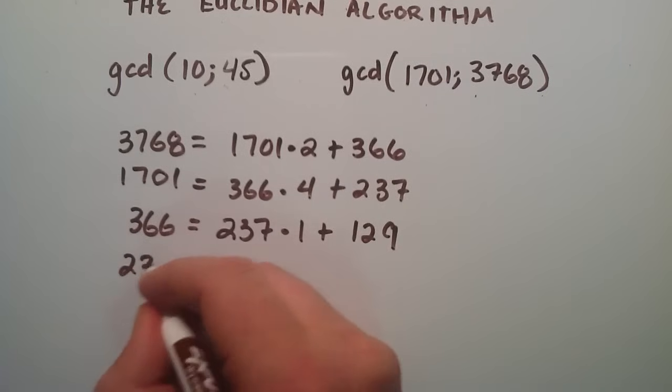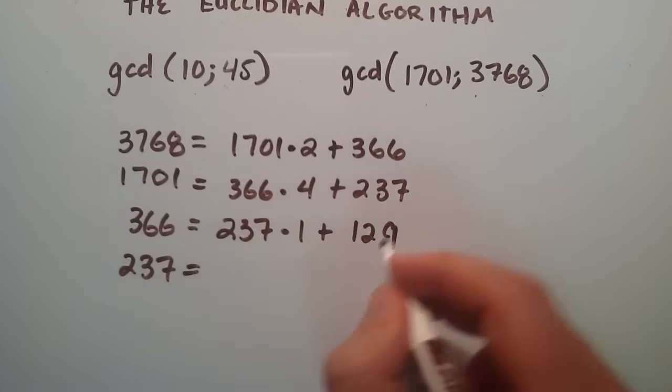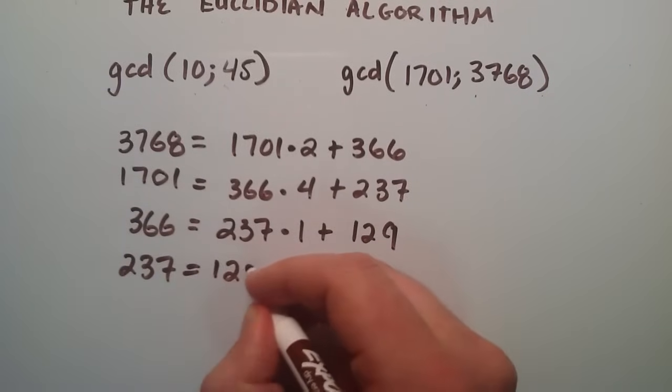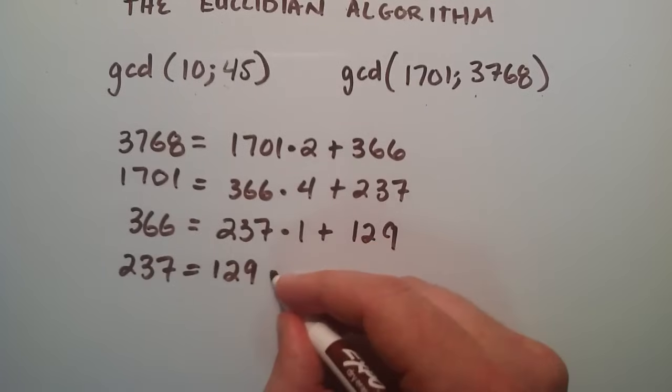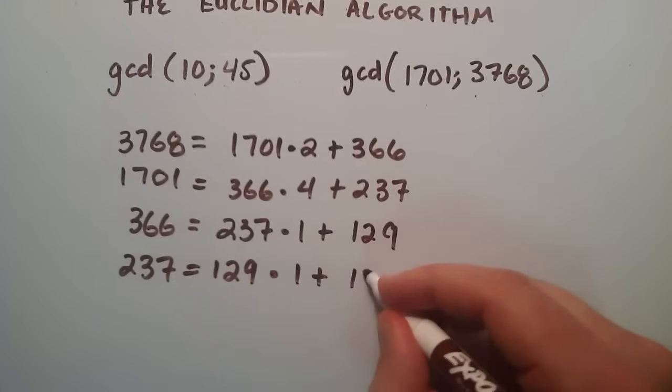237, moving that to the left hand side now. 129 goes where the 237 was. And 129 goes into 237 one time, with a remainder of 108.